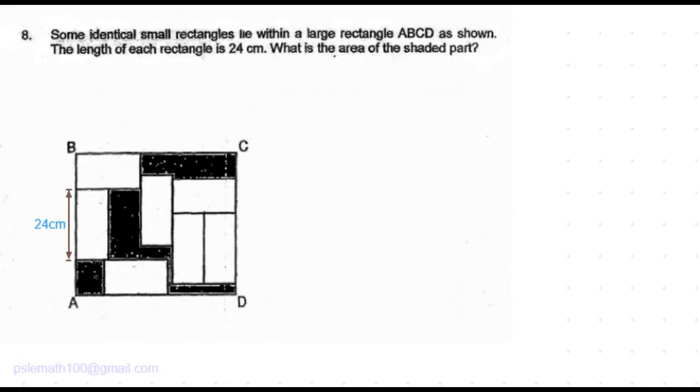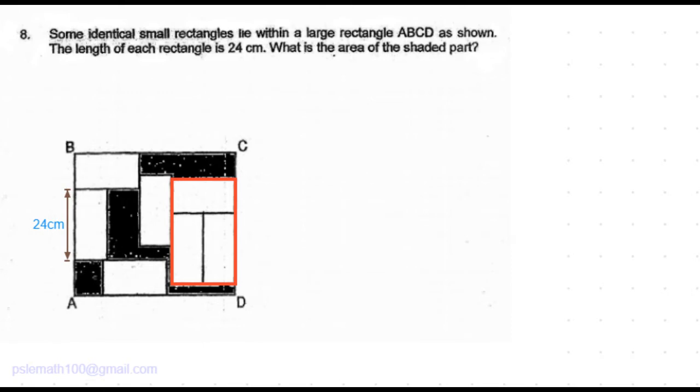The length of each rectangle is 24 centimeters. What is the area of the shaded part? The length of the smaller rectangle is given to be 24 centimeters. Let's look at the rectangle that I have marked in red — it consists of three smaller rectangles.